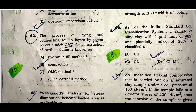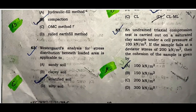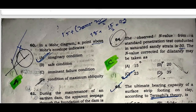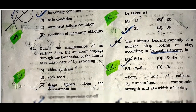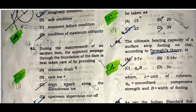Question sixty-two: The process of laying and compacting soil in layers by power rollers under OMC for the construction of an earthen dam is known as compaction. Question sixty-three: The observed SPT value from a standard penetration test conducted in a saturated sandy stratum is 30. The SPT value corrected for dilatancy may be taken as 23. Option C is correct.